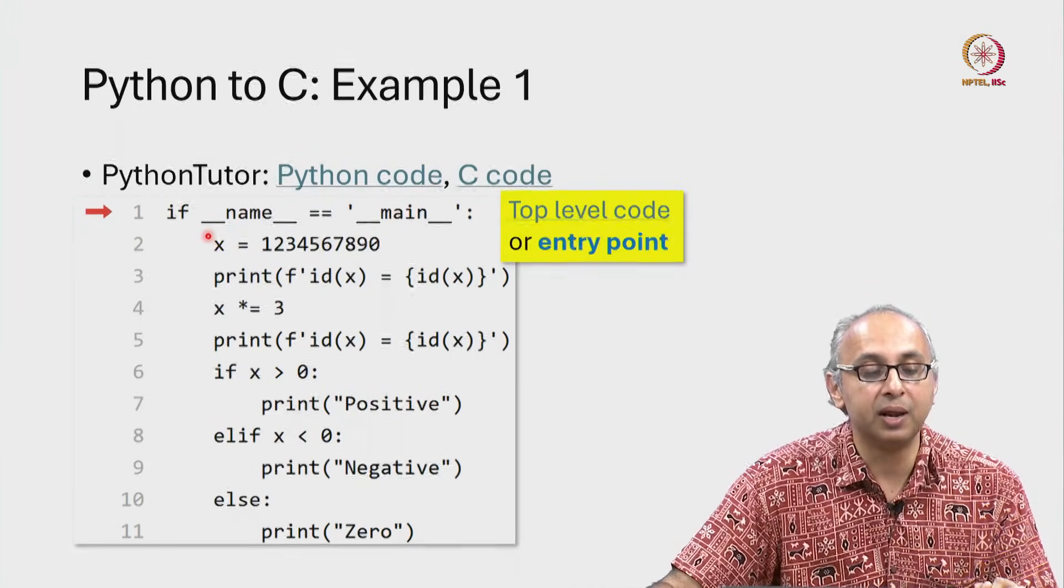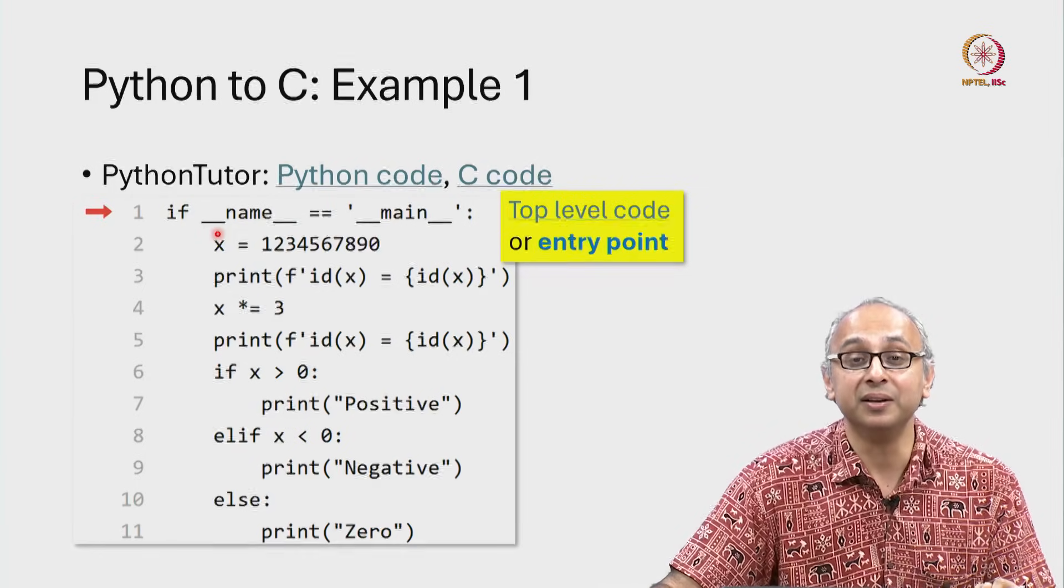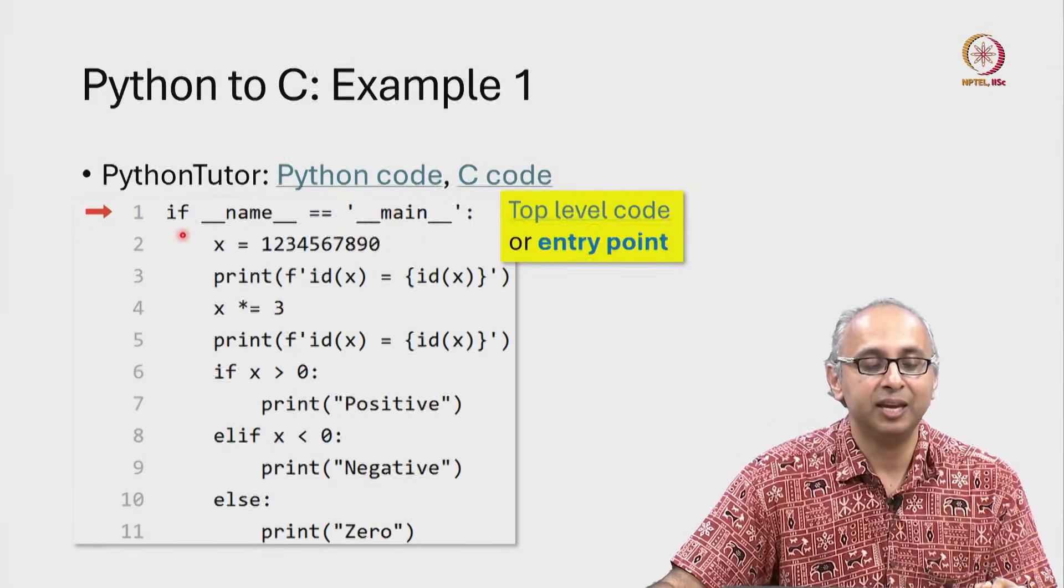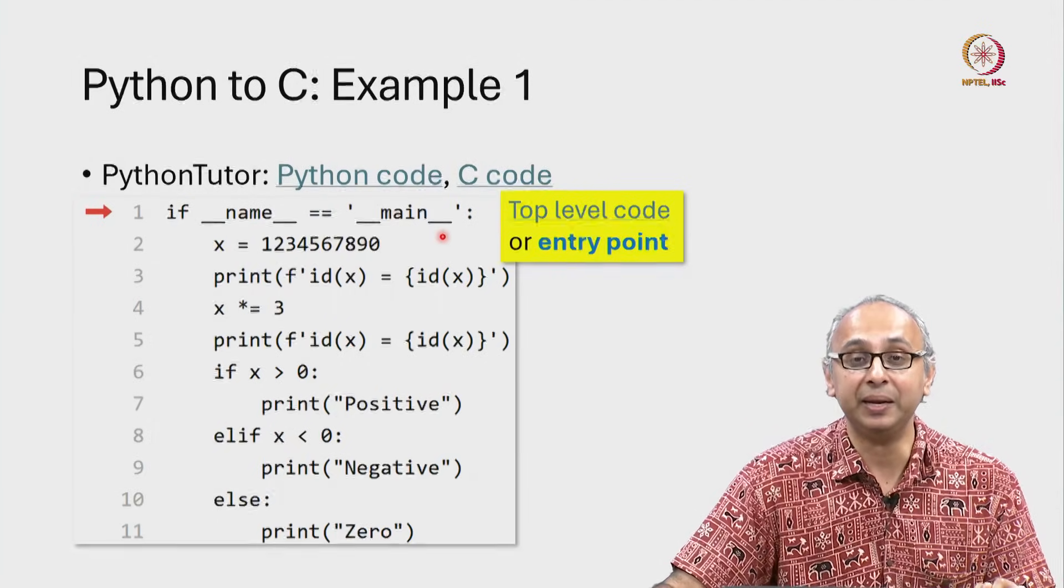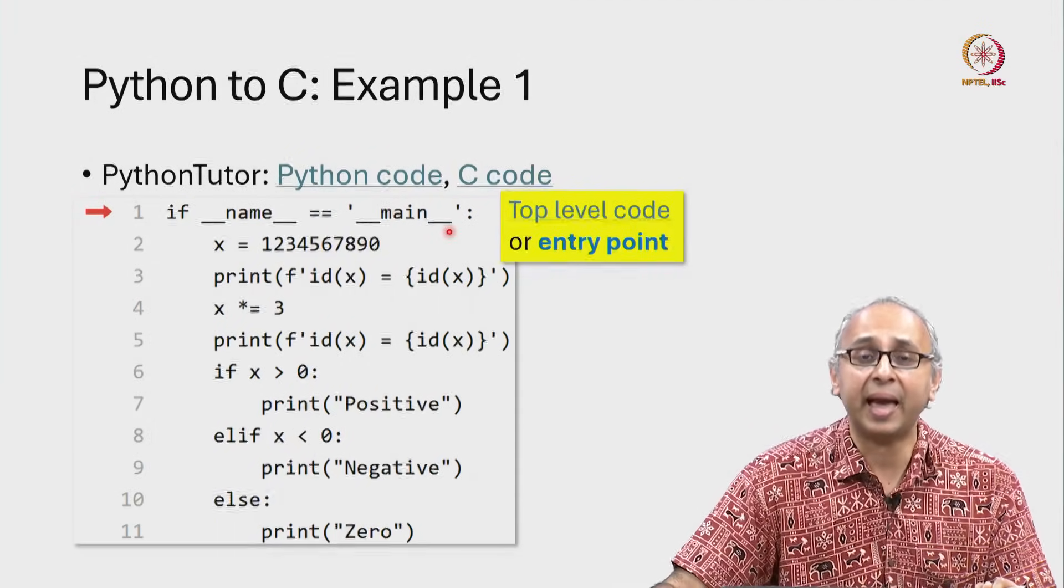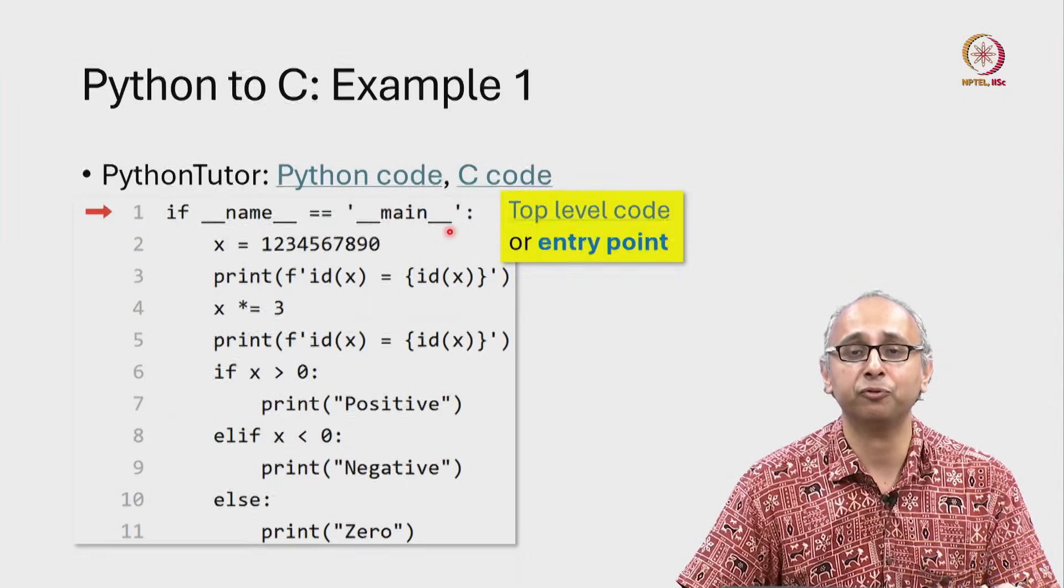This is a double underscore. Python programmers often call this dunder and they read this as if dunder name is the string dunder main. This is the accepted way of writing the starting point of your code.